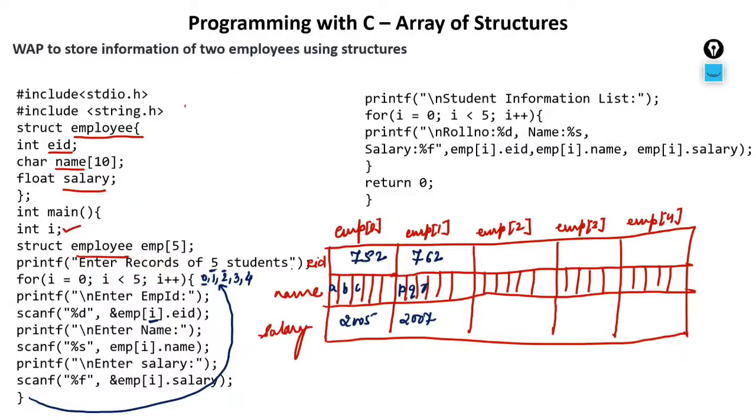Again the value of i will increment it to 2. Then suppose 797. Name is XYZ. And it will ask for salary, which is 1008.